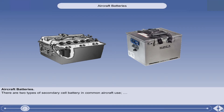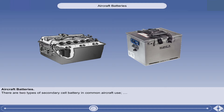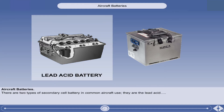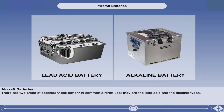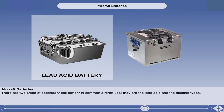An aircraft's main battery is made up of a number of secondary cells joined together in series to produce the required voltage. There are two types of secondary cell battery in common use: the lead acid and the alkaline types. We will first look at the two types of battery, beginning with the lead acid type, and then look at how the condition of the battery is checked and maintained.